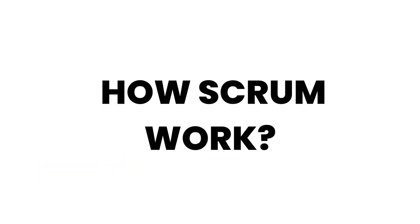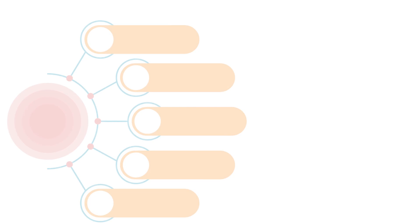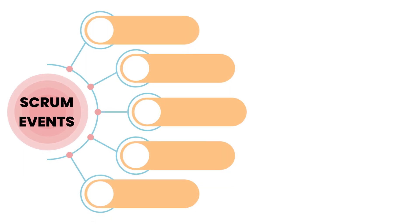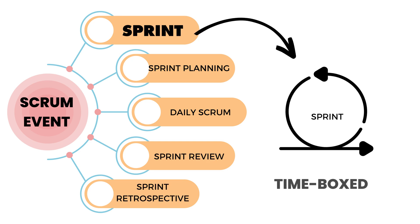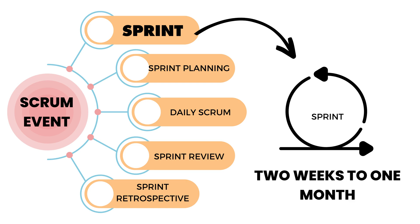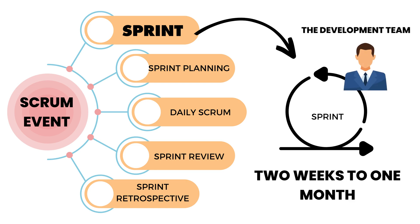Let's see how Scrum works. Scrum has five primary events — Sprint, Sprint Planning, Daily Scrum, Sprint Review, and Sprint Retrospective. The sprint is a time-boxed iteration of work, typically two weeks to one month in length, where the development team works to create a potentially releasable increment of the product.